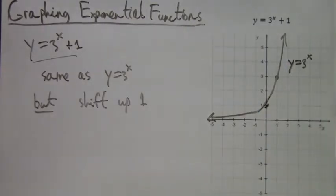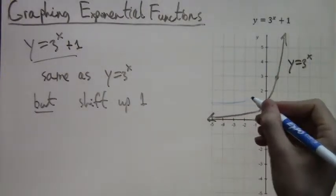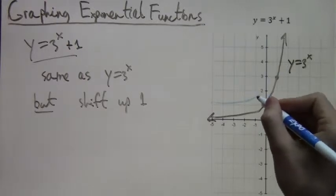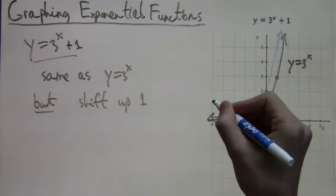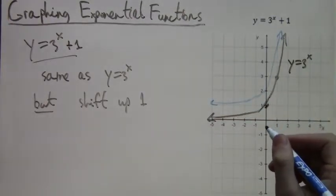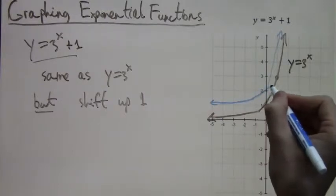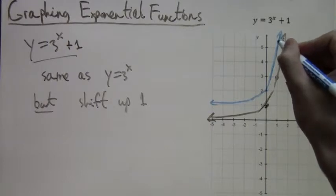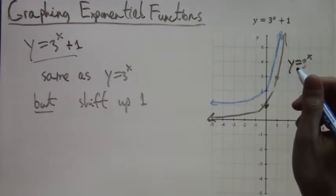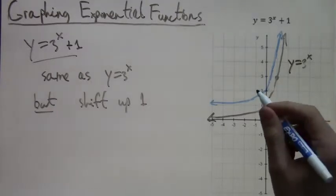So instead of starting very close to zero, we're going to start very close to one. And there we start. And then we go through one point above, and there is a graph, one unit higher than the previous version. And this new graph in blue is y equals three to the x plus one.